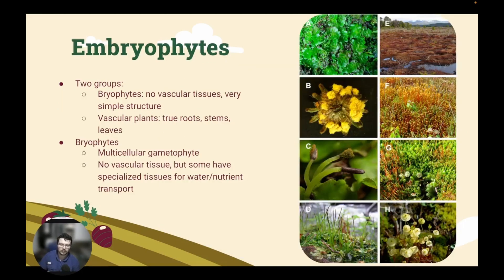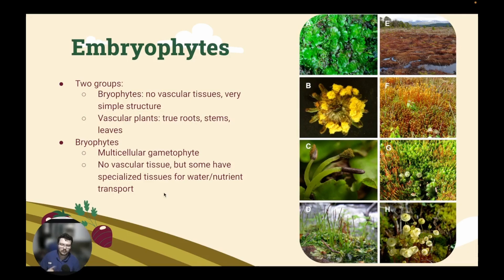Next up is our embryophytes. The embryophytes can be split into two groups. The bryophytes have no vascular tissue and very simple structures — things more similar to our mosses or common organisms that just grow on rocks. Some of these we can find in Kansas; others you may find more in Colorado and swampy regions near mountains. For the bryophytes, we have multicellular gametophytes and no vascular tissue, but in some cases we do have specialized tissues for water and nutrient transport.